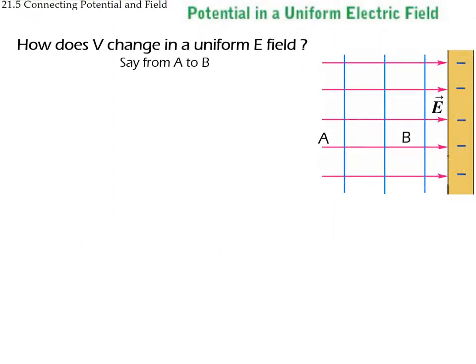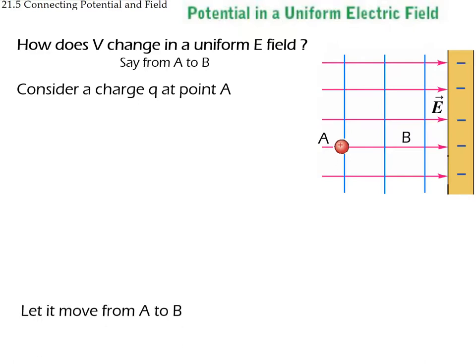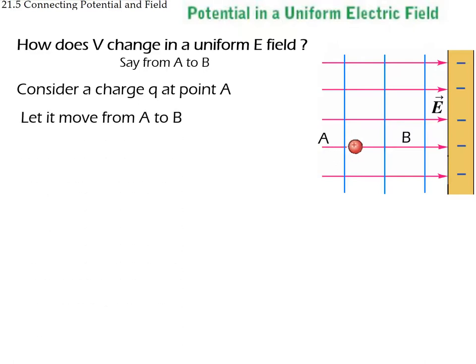Now imagine two points A and B. How does the voltage change as you go from A to B? We go back to our definitions: place a charge at point A and let it move to B.